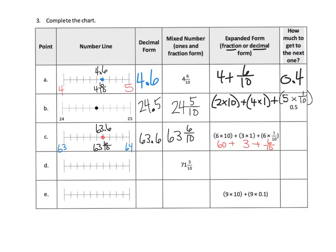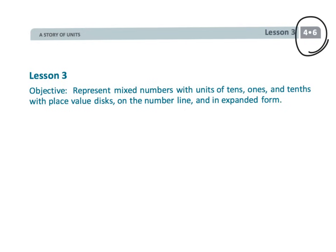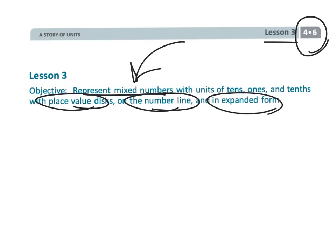This is a great way for students to practice all these different representations. You could even turn each representation into a card and play a game like memory, matching, or Go Fish — where students collect a set of cards that all equal the same value. That wraps up fourth grade module 6 lesson 3: representing mixed decimals and fractions in a variety of ways using place value discs, number lines, and expanded form.